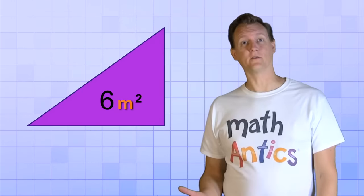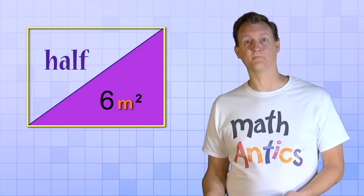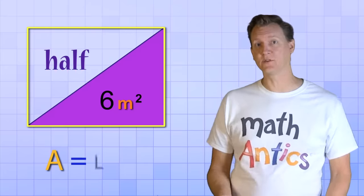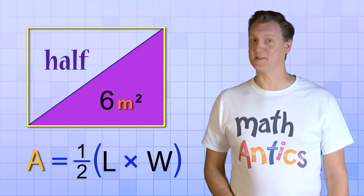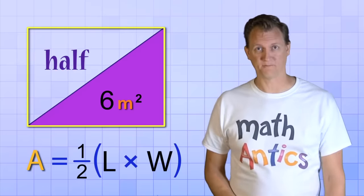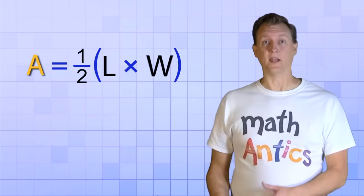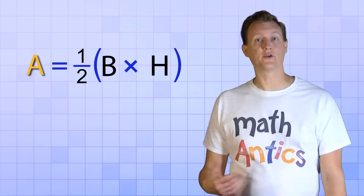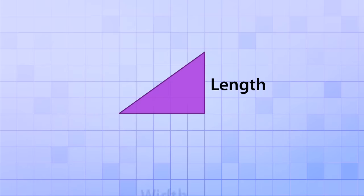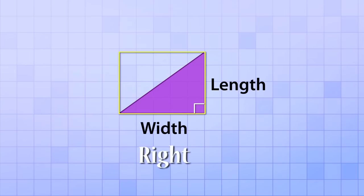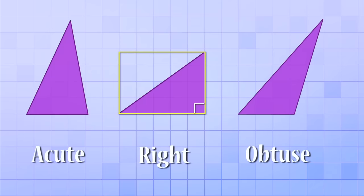So the formula for the area of a triangle should be half of a rectangle — area equals one-half of length times width — but with one important difference. Instead of L for length and W for width, we're going to use two different names for the triangle's dimensions: base and height. The names length and width worked for a right triangle, because it's exactly half of a rectangle, but those names don't really work for other kinds of triangles like acute or obtuse triangles, because it's unclear which side should be which.